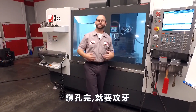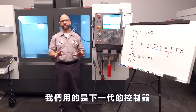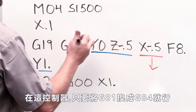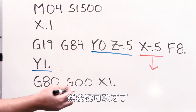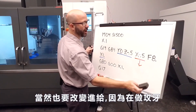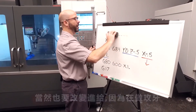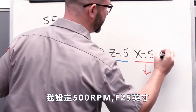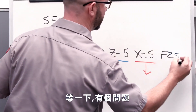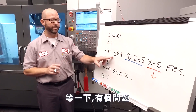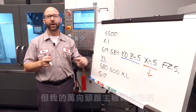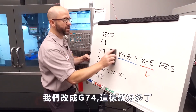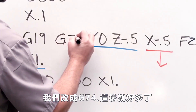We drilled the hole, now it's time to tap it. On a next-generation control, all we've got to do is change that G81 to a G84 and now we're tapping. We also need to change our feed rates and our RPM — I'm going to go a very wimpy 500 RPMs at 25 inches a minute. Now wait — here's a problem: I used a G84 to tap, but our right-angled head reverses the direction of my spindle, so I can't use a G84. We should be using a G74.